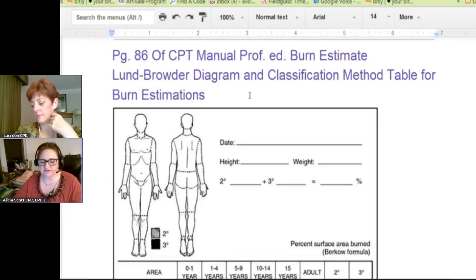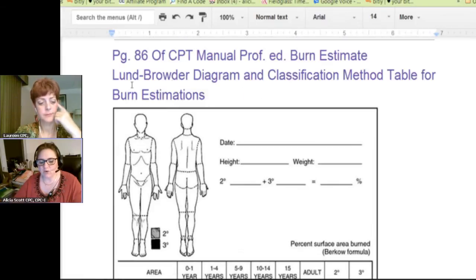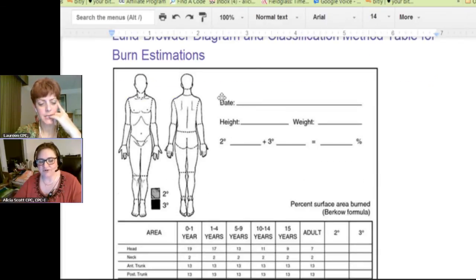What this Lund Browder did was they came up with a graph that said, not only is an infant different than an adult, but as they grow, their percentages change, their body parts change.